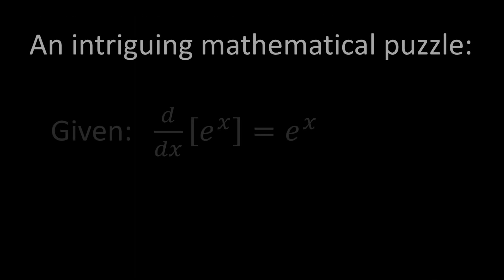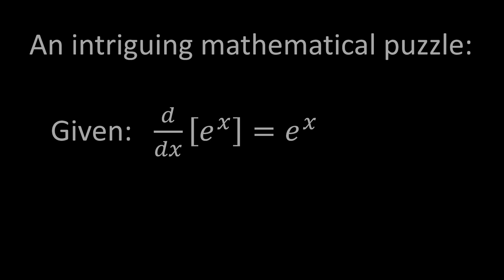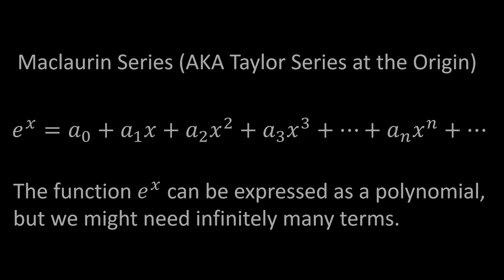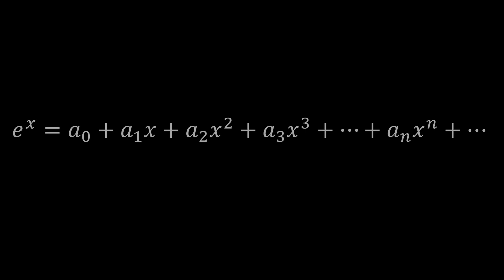Let me propose the following math problem: given that the function E to the x is equal to its own derivative, solve for E. At first glance you might say, wait — is this enough information? How do we get a number out of this? The first thing we want to do is expand E to the x as a Maclaurin series. We write this function as a polynomial: a0 plus a1·x plus a2·x² plus a3·x³ plus dot dot dot plus an·xⁿ, potentially out to infinity. This is the most general way of writing a polynomial, but we don't know what any of these coefficients are yet.